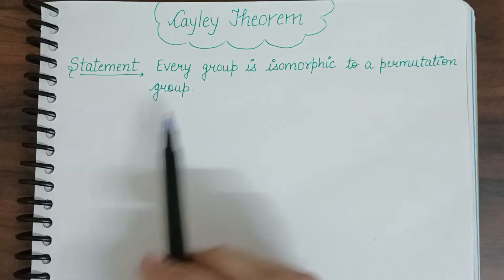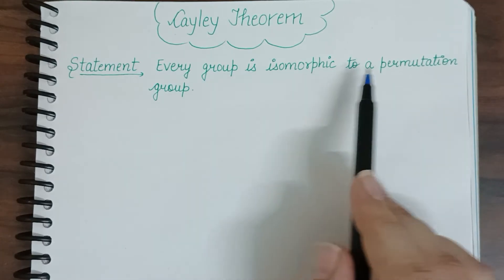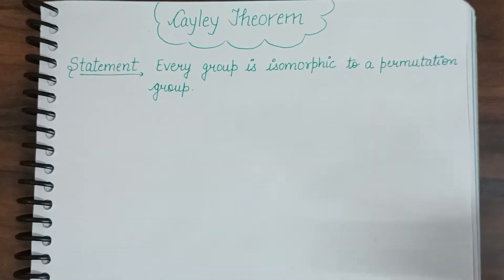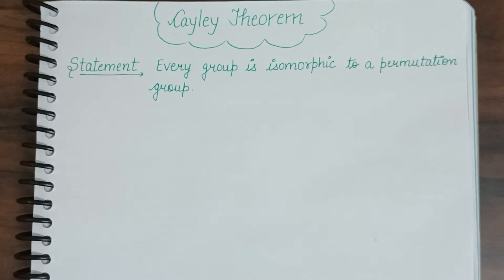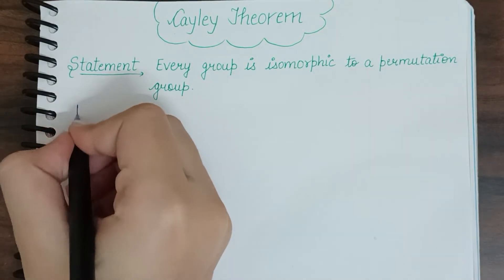The statement is: every group is isomorphic to a permutation group. This theorem says that any group will be isomorphic to its permutation group. Let's see the proof of this theorem.